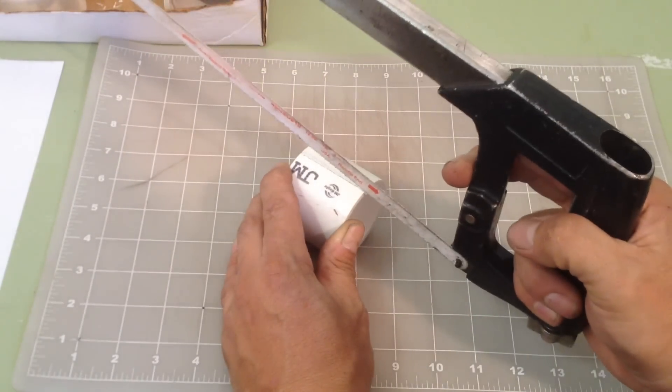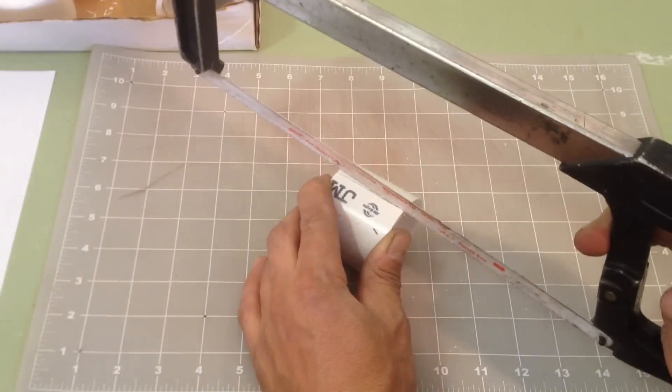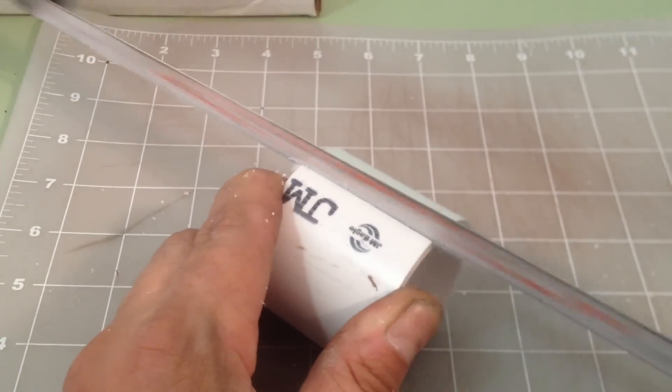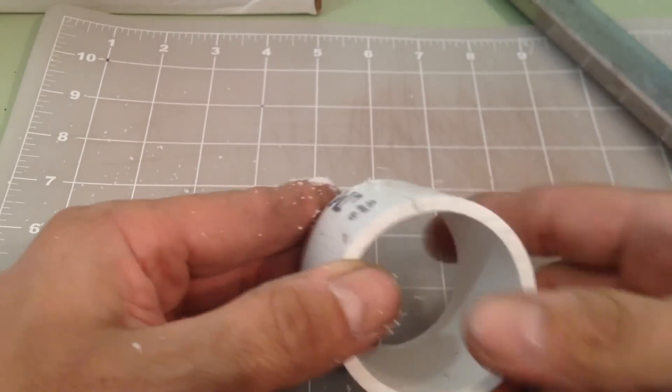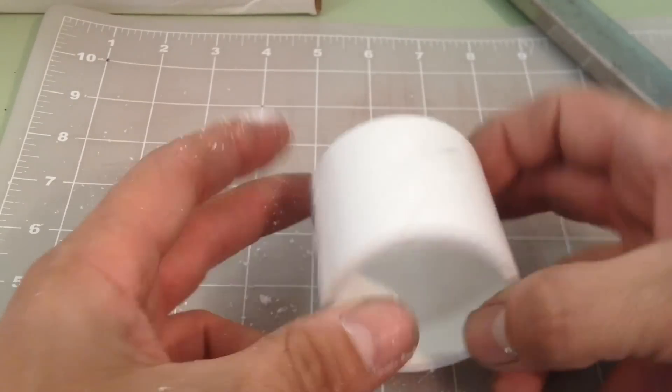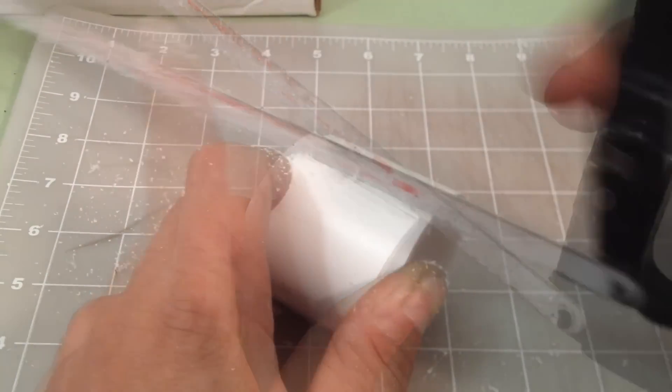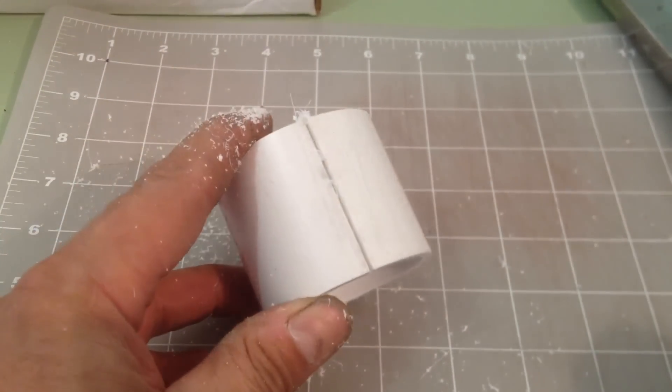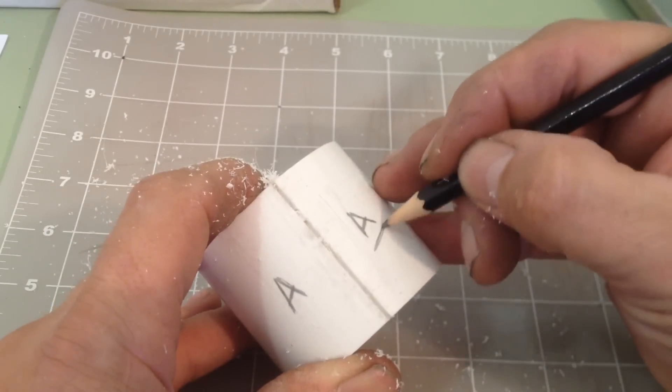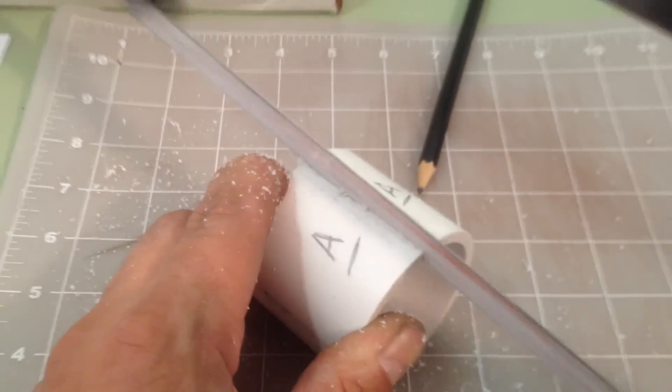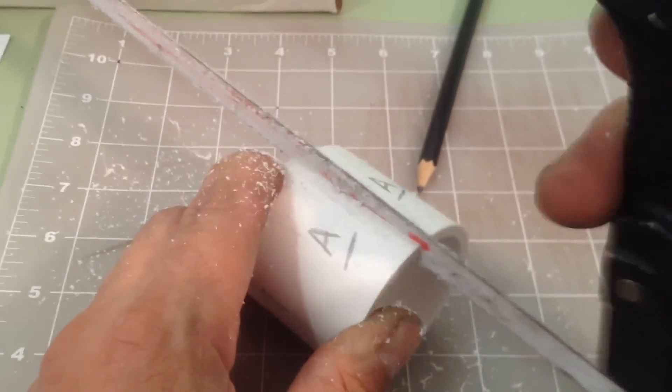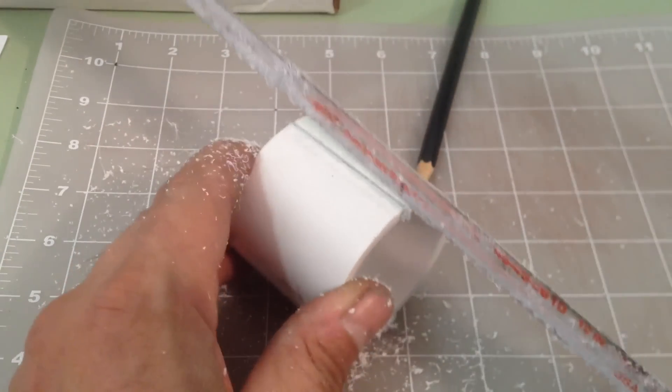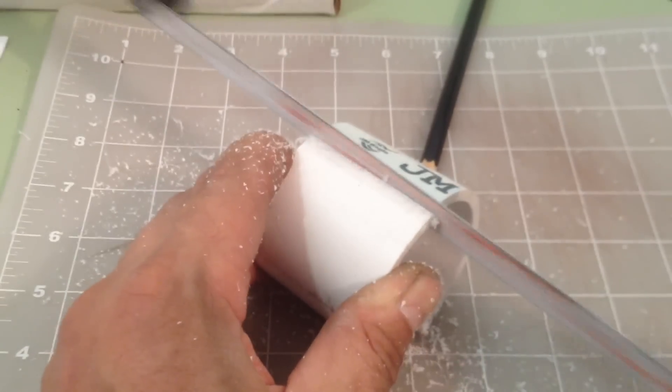Using a hacksaw I carefully cut along the line down the length, stopping just short of cutting through the pipe wall. Turning the section I repeat this on the opposite side. I pause to mark the piece for reference. After cutting through the pipe wall, I turn the piece again and complete the cut on the first side, leaving me with 2 identical halves.